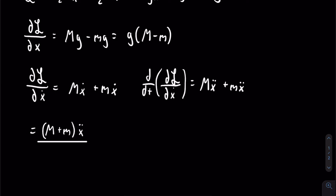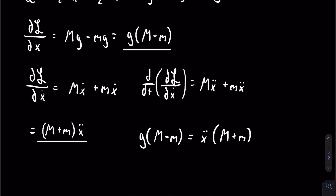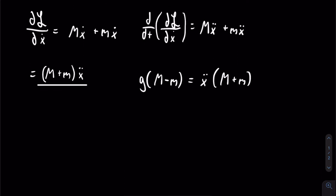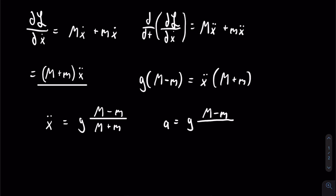Now using the formula, we equate the two expressions and get that g times the quantity capital M minus lowercase m is equal to x-double-dot times the quantity capital M plus lowercase m. Dividing both sides by capital M plus lowercase m, we get that x-double-dot is equal to g times the fraction capital M minus lowercase m all over capital M plus lowercase m. This is our final equation — you can replace x-double-dot with a if you like, since it represents the acceleration of the system. The acceleration of one mass is equal in magnitude to the acceleration of the other.